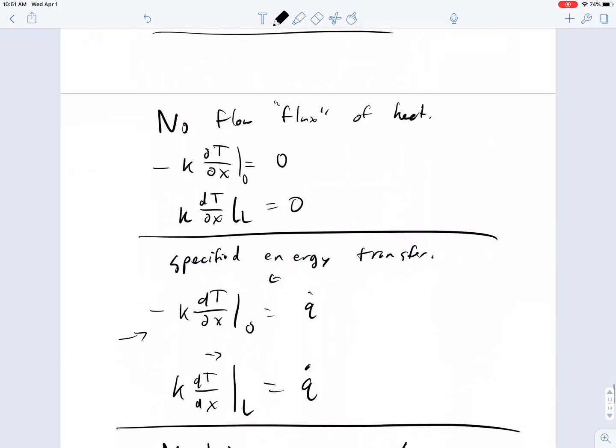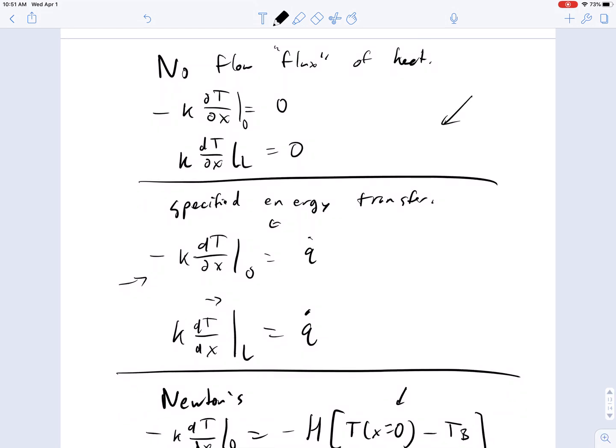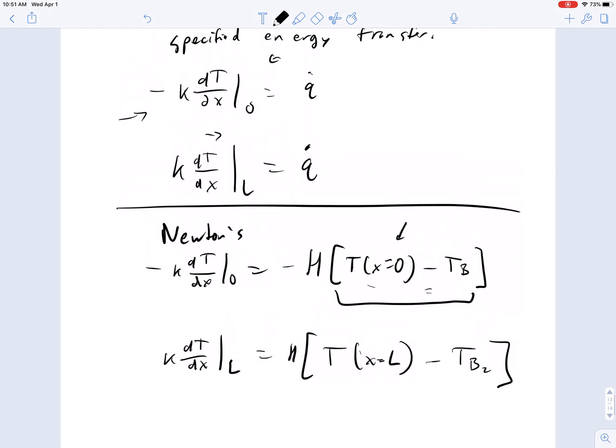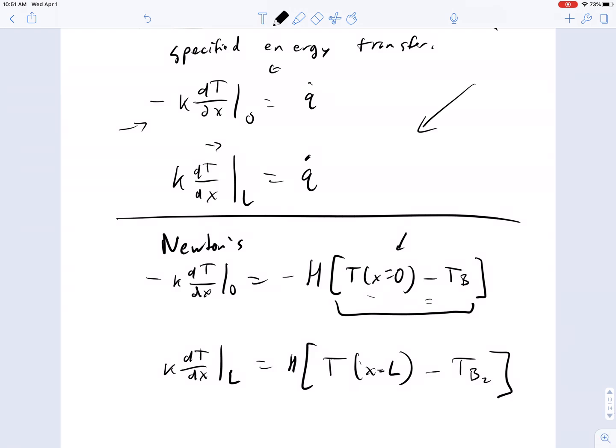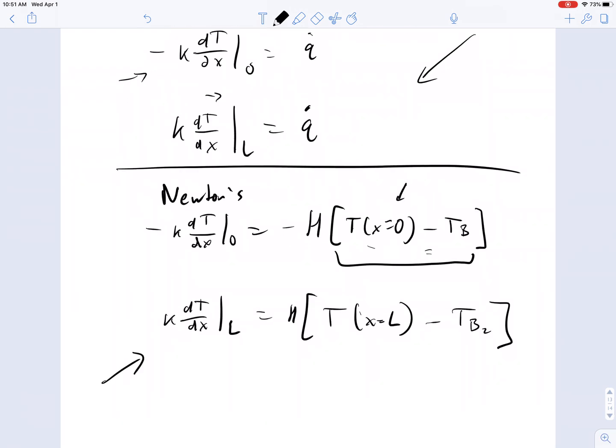Specify the condition. Specify that it's insulated. Specify a heat transfer, energy transfer at that position. Or specify special heat or energy transfer that has to do with a difference in temperature between the material on the rod and the thermal reservoir.